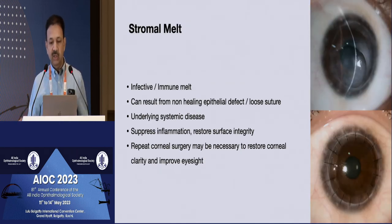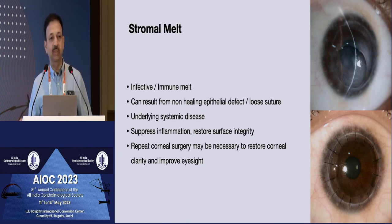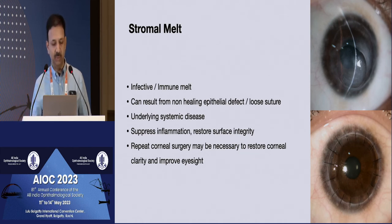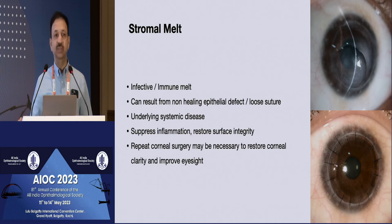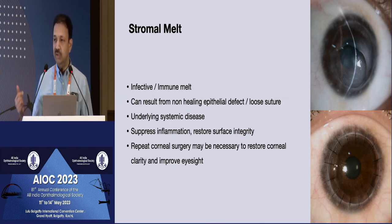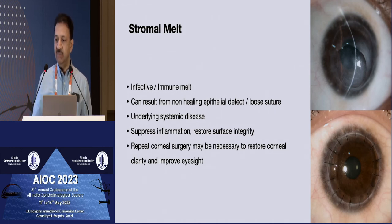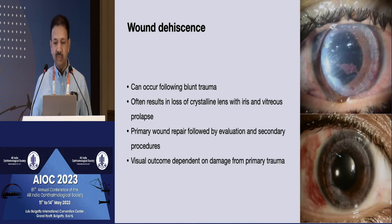You can also get stromal melt from any of the earlier indications — a non-healing epithelial defect, loose sutures, or the primary condition for which the patient was being treated — because of underlying systemic disease. It's important to suppress the inflammation, restore the integrity first, get the surface to heal, treat the systemic condition, then address the corneal graft. For example, a patient underwent a DALK, had a melt, was treated, and finally underwent a repeat DALK with a good outcome.